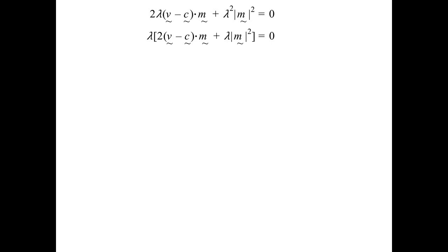So either lambda is equal to zero or the expression that they're looking for, lambda is equal to 2 M dot C minus V over the magnitude of M squared, which satisfies what the question asked because it said find lambda in terms of M, C and V. And I've done that. Yeah, it's horrible, but I've got the answer that they've asked for.